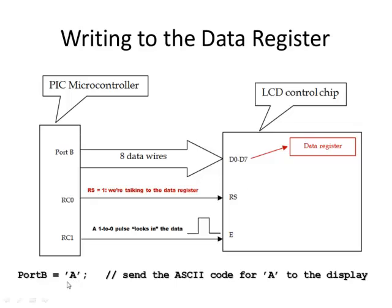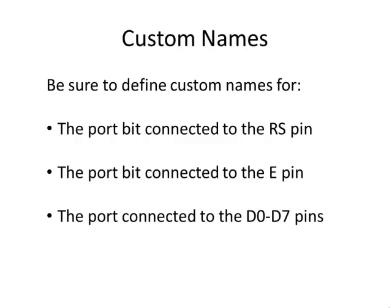In programming, you want to define custom names so you don't have to memorize which pin is connected where. Define the name RS and equate it to the port bit you're connecting it to. Same thing with the E pin — define a name called E and equate it to its port bit. And for the port connected to D0 through D7, you might say #define LCD as port B.